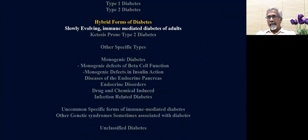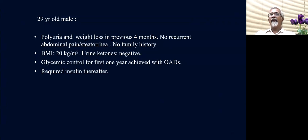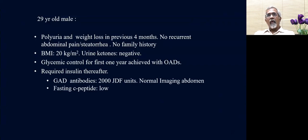Let me focus first on the hybrid forms of diabetes — slowly evolving immune-mediated diabetes of adults. A clinical example: a 29-year-old male with osmotic symptoms and weight loss over four months, no family history, BMI of 20 kg/m², negative ketones, and glycemic control that was easy in the first year with oral anti-diabetic agents. He required insulin thereafter. On testing, he was GAD antibody positive, C-peptide levels were extremely low, and imaging did not show a shrunken pancreas or calcification.